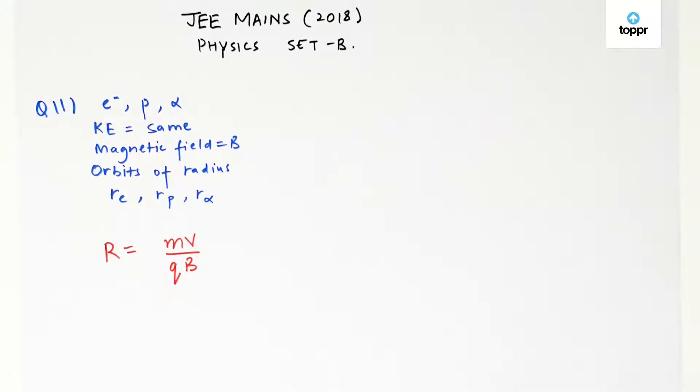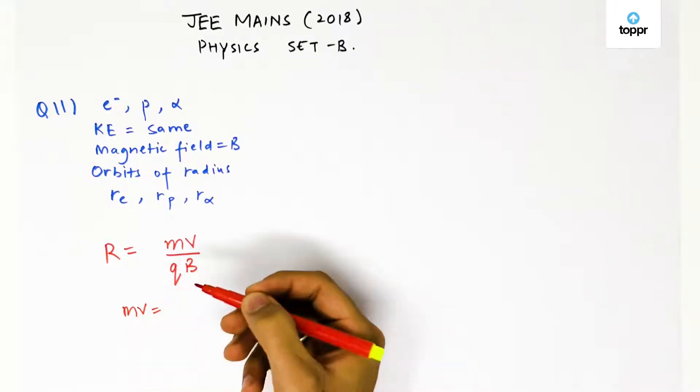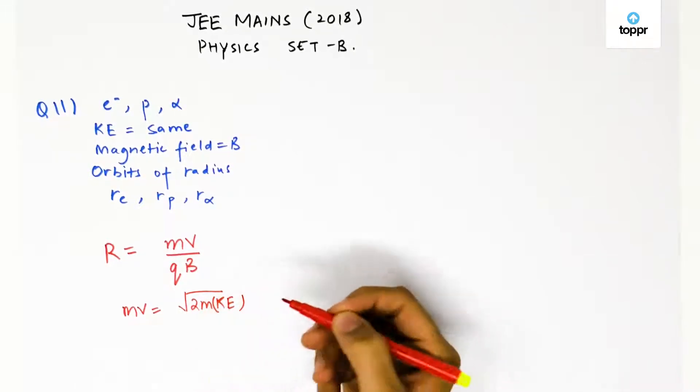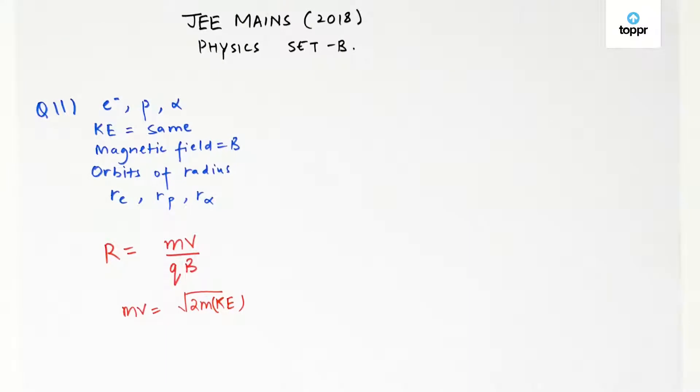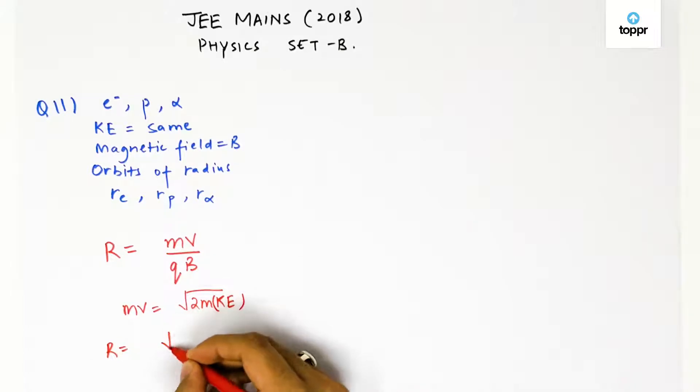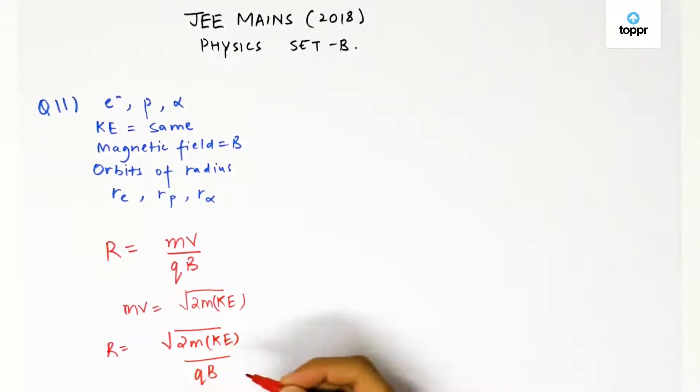We have not been given what mv is but we can equate mv to the kinetic energy. What is the relation between momentum and kinetic energy? It is this: mv equals root of 2m times KE. This is the relation between momentum and kinetic energy where KE is the kinetic energy and that is same for all of these particles. We can write the radius now as root of 2m KE divided by qB.